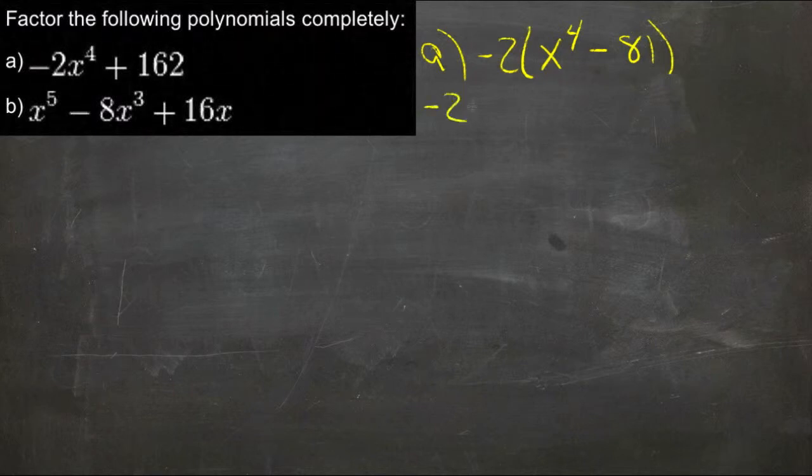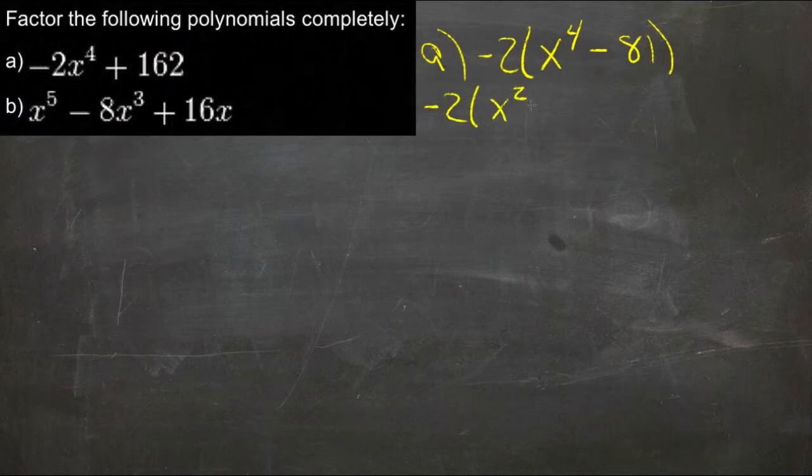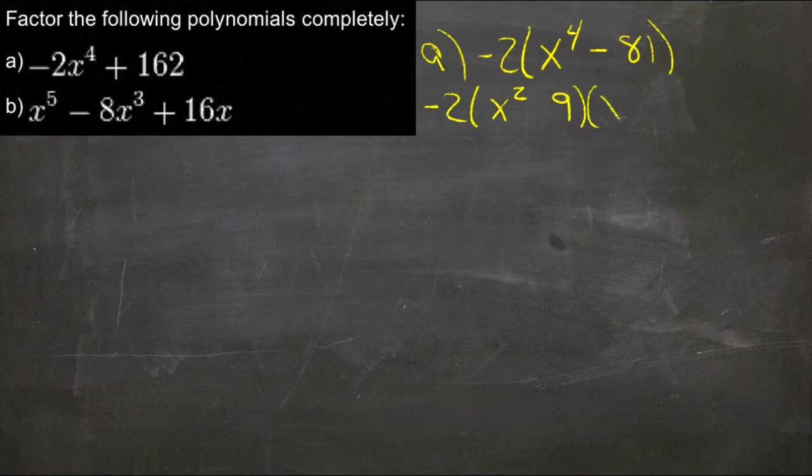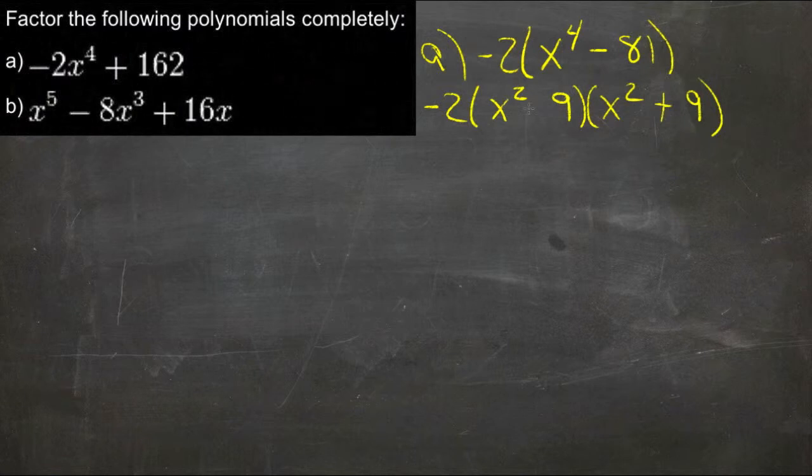So we have negative 2 times the square root of the first one would be x squared, and the square root of 81 would be 9, so we write that twice, x squared, 9, plus in between one, minus in between the other.